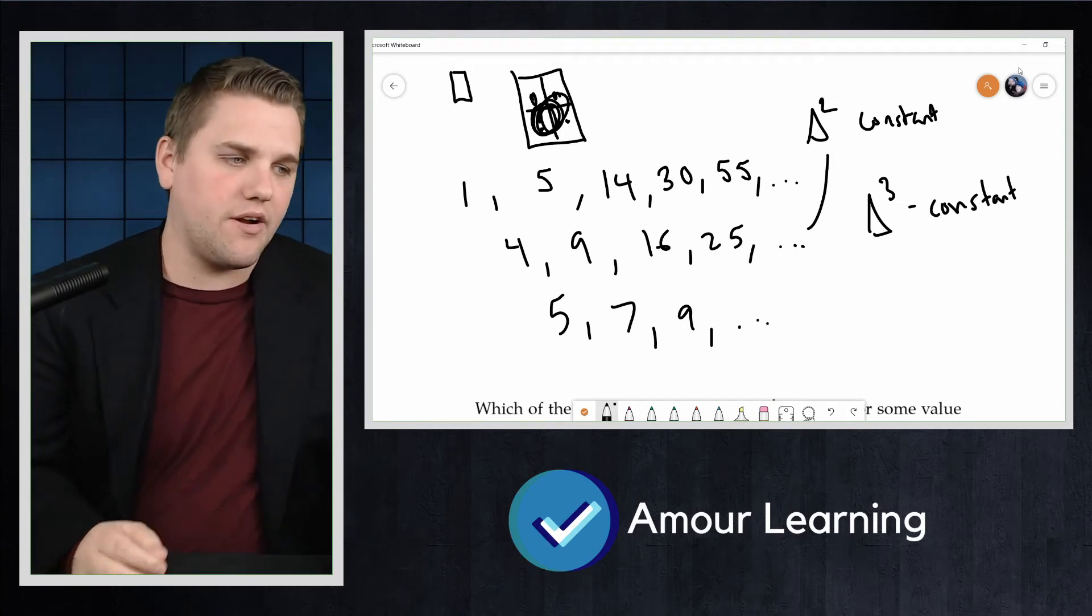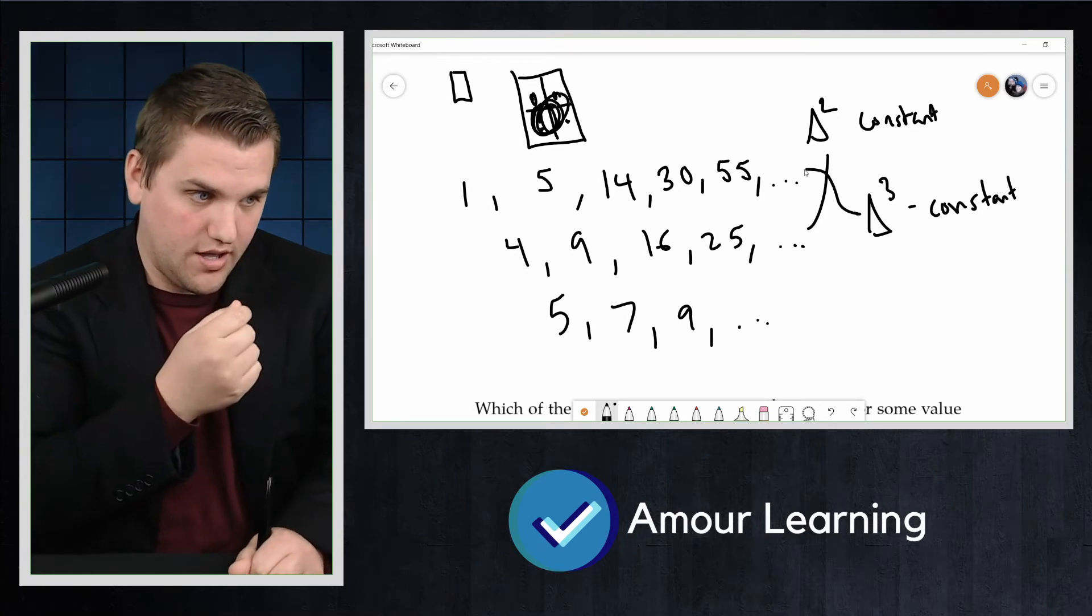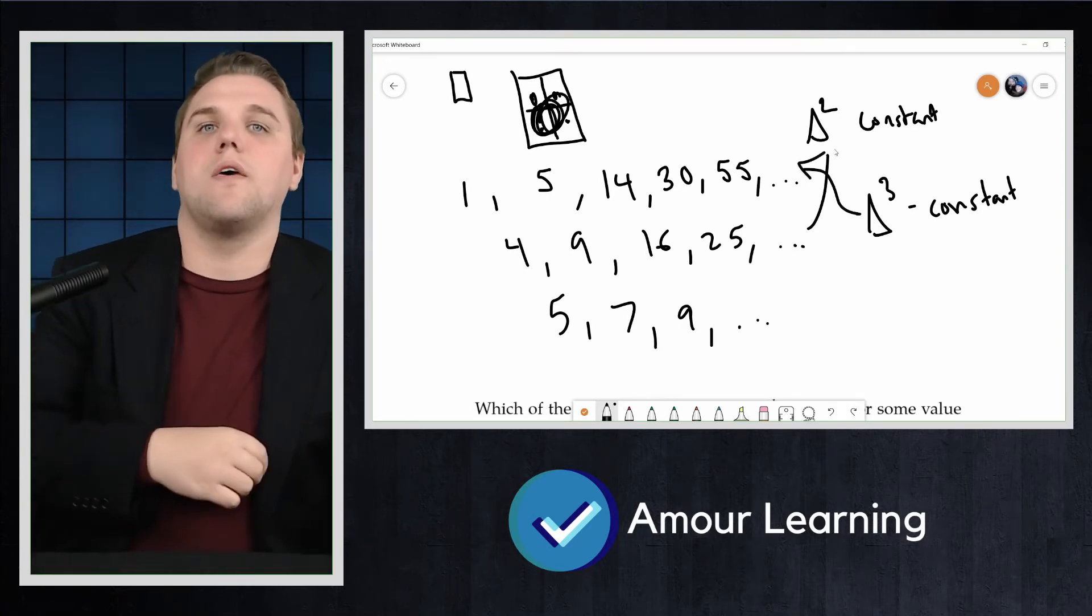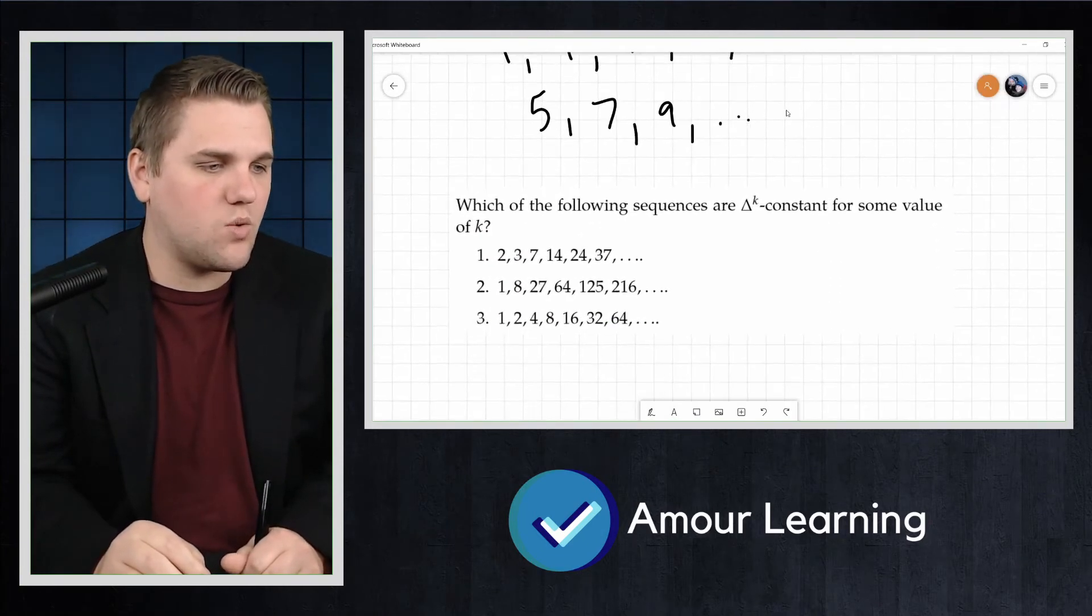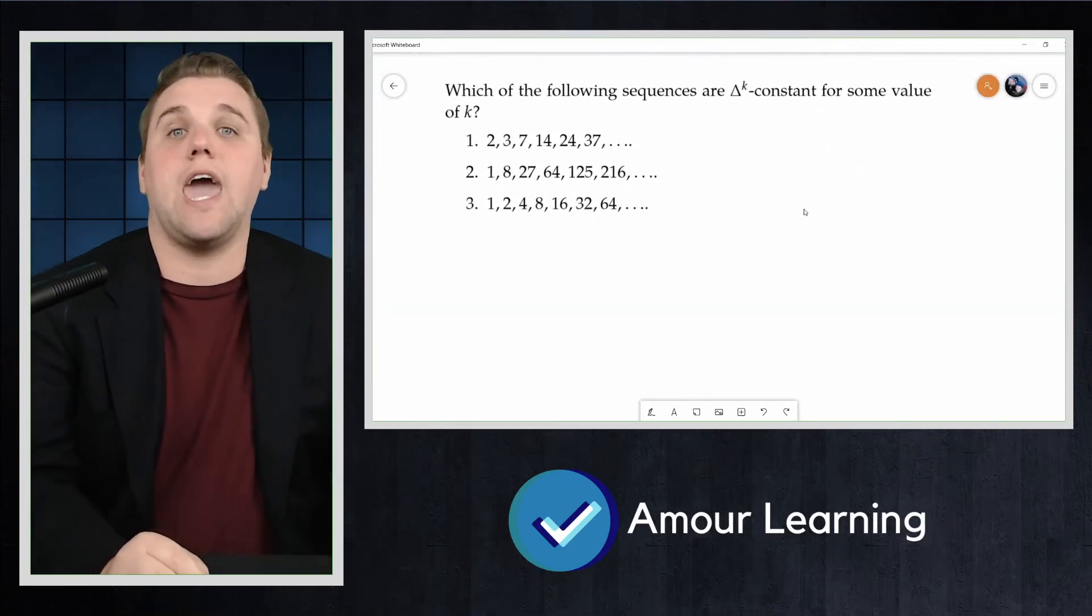Let's do an example together. Which of the following sequences are delta k constant for some value of k?